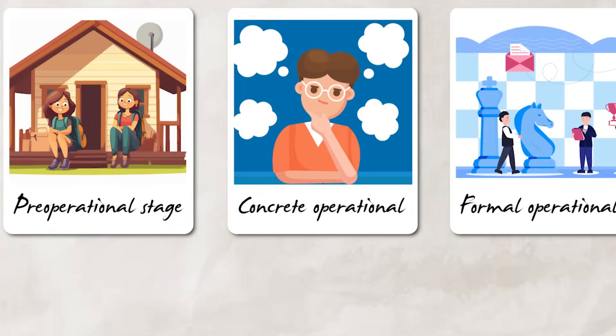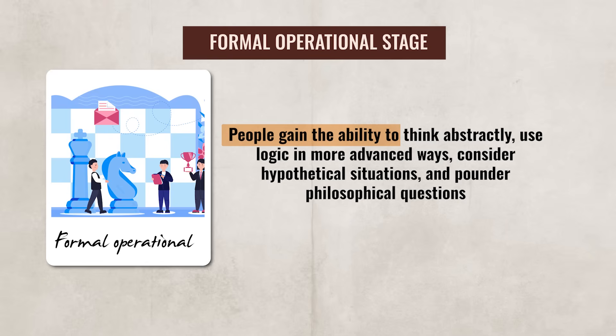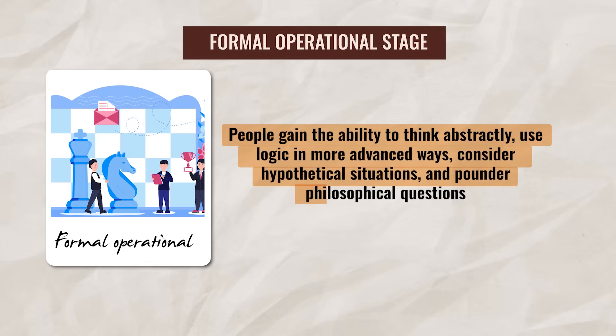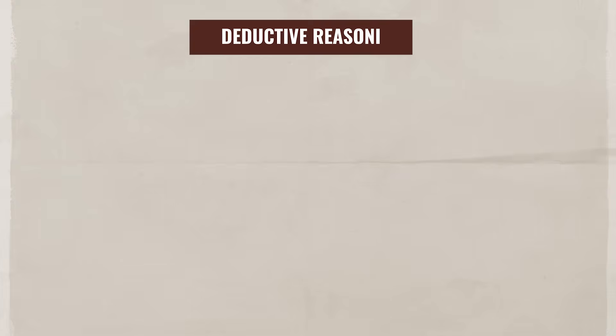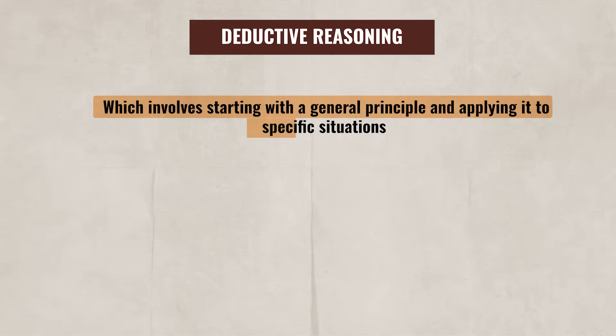Eventually an individual enters the last stage: the formal operational stage, which generally starts around age 11 or 12. Interestingly, Piaget believed that not everyone will fully reach this stage. During this stage, people gain the ability to think abstractly, use logic in more advanced ways, consider hypothetical situations, and ponder philosophical questions. Individuals can approach problems methodically and logically even when the situation is abstract, often utilizing deductive reasoning — starting with a general principle and applying it to specific situations.